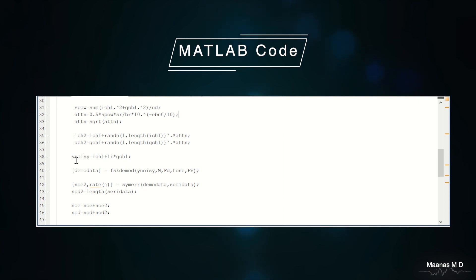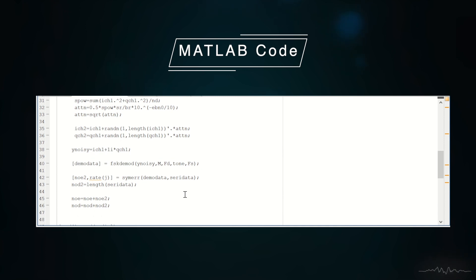Now we add the in-phase component as well as quadrature phase component to find the final signal which is passing through this channel. For non-coherent demodulation we can make use of the fskdemod function. The inputs are the noisy stream of data which is coming through the channel, M which is 2 for binary FSK, FD which is the difference between the basis function frequencies, tone which is the number of sampling points per symbol, and FS which is the sampling frequency for the matched filter.